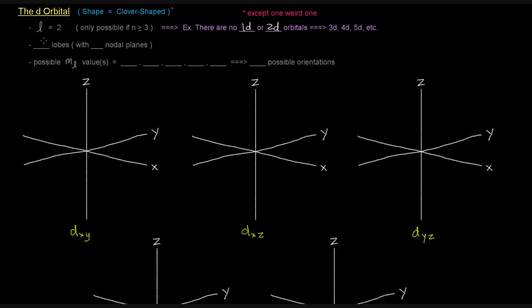So this is clover-shaped, so it's got four lobes, and there's actually two nodal planes, whereas the p orbital had one nodal plane, the d orbital has two nodal planes.